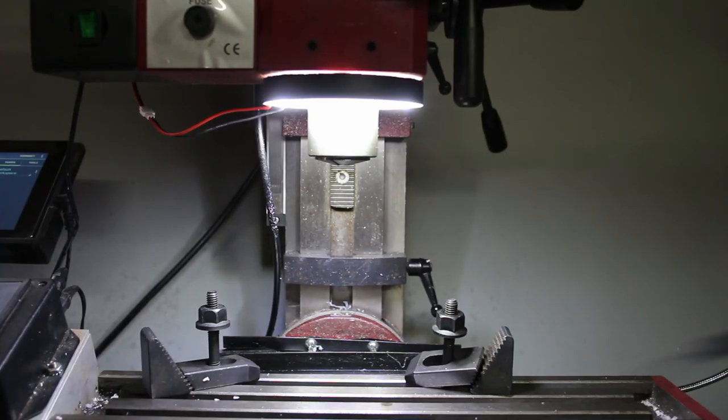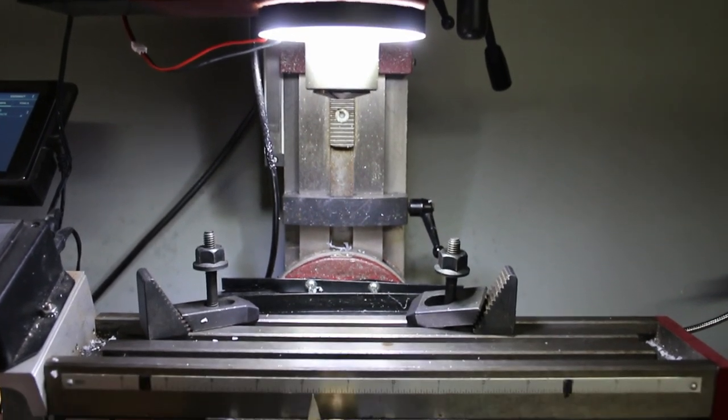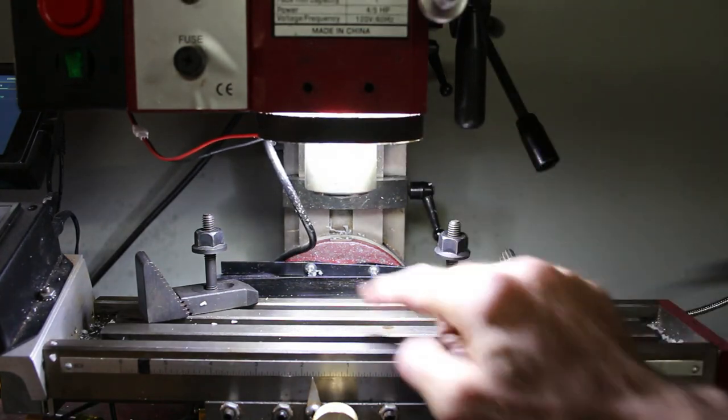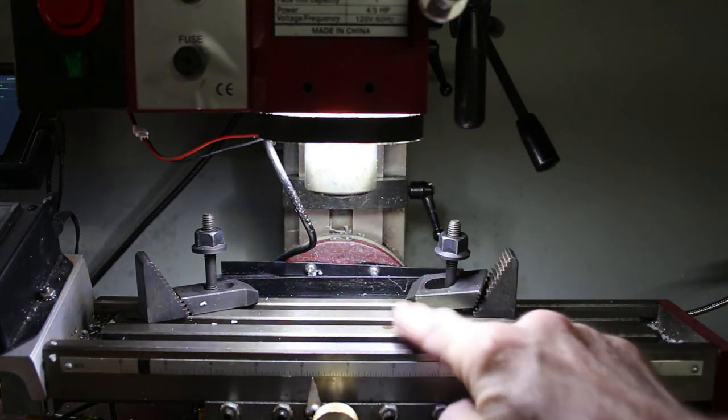So here's another view with all the bright movie lights turned off, and that lights the table beautifully. If I lower the head down, you can see that the work area, immediately below the cutter, it's really well lit.